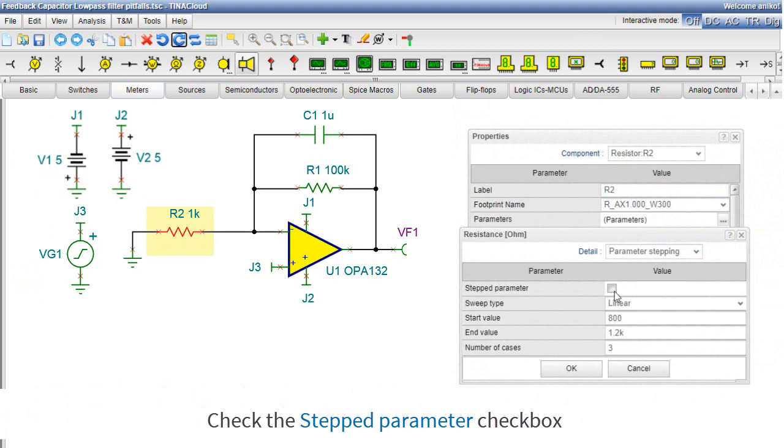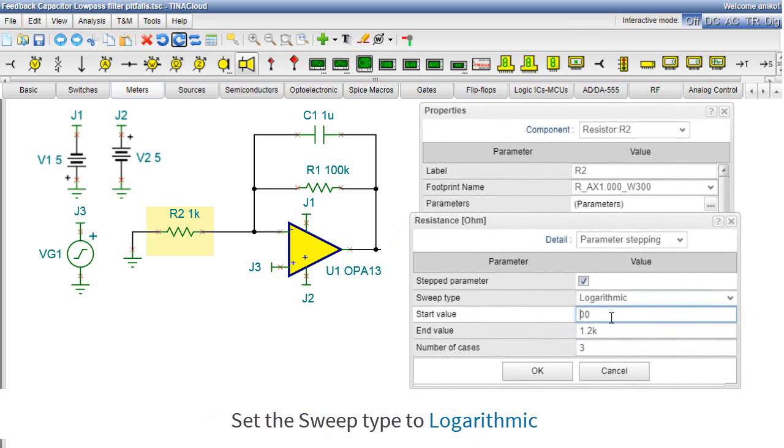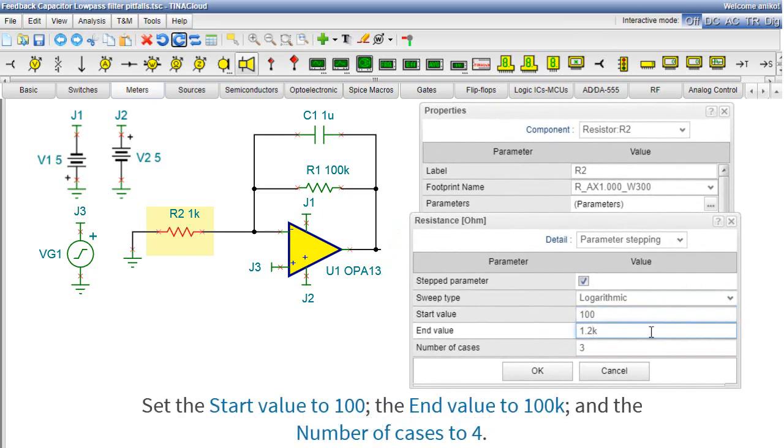Check the Stepped Parameter checkbox. Set the Sweep Type to Logarithmic. Set the Start Value to 100, the End Value to 100k, and the Number of Cases to 4.